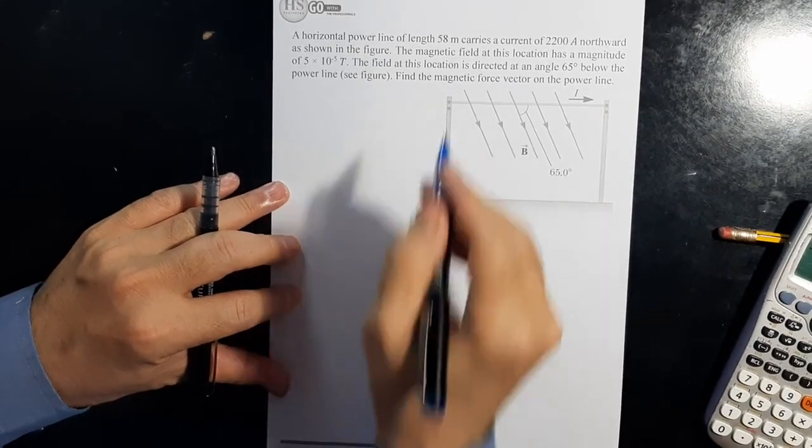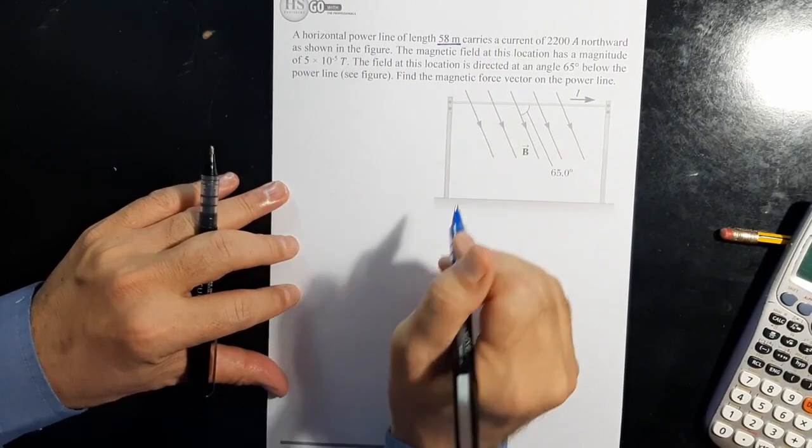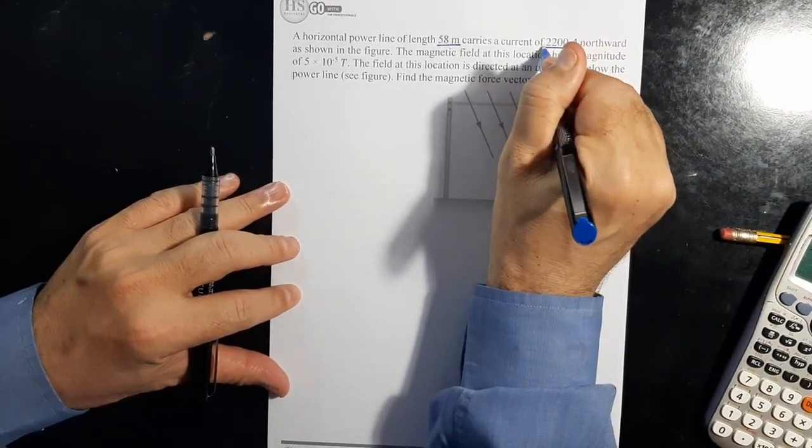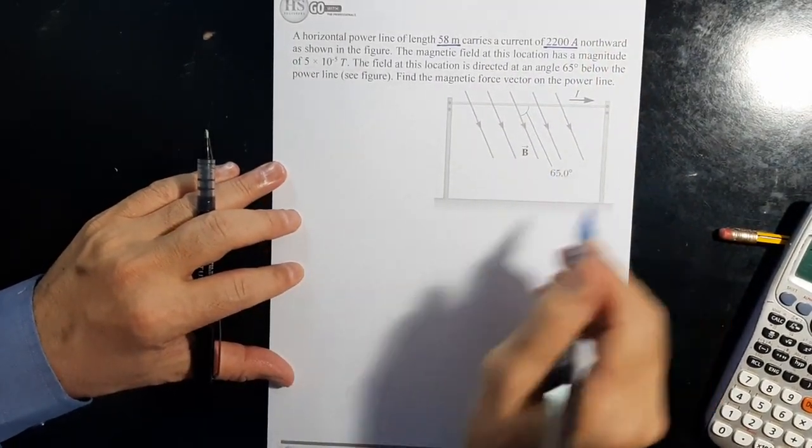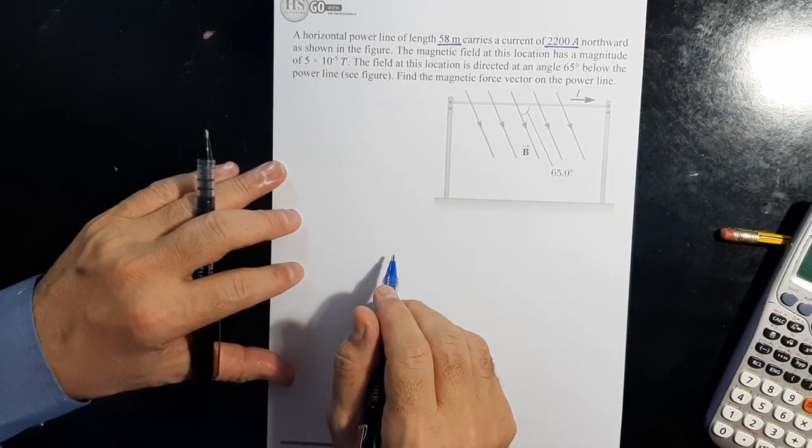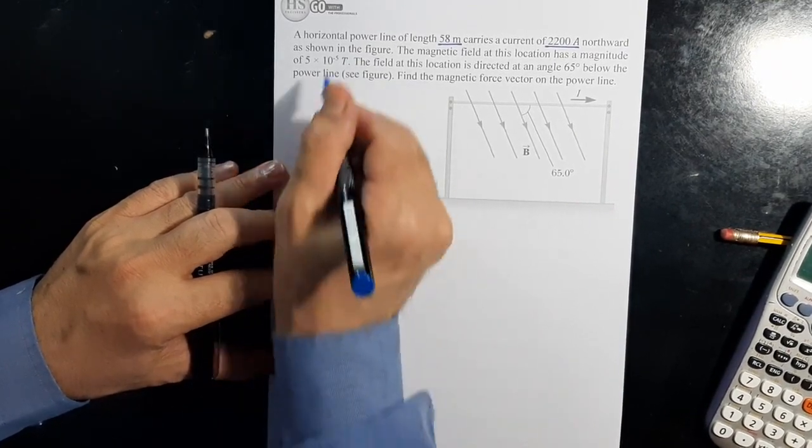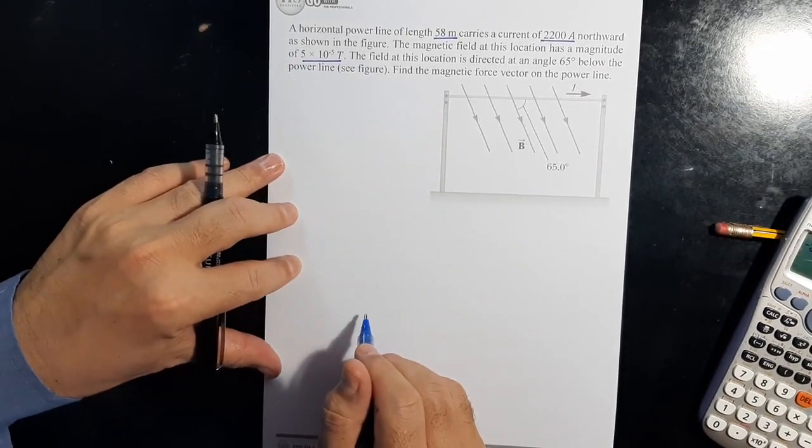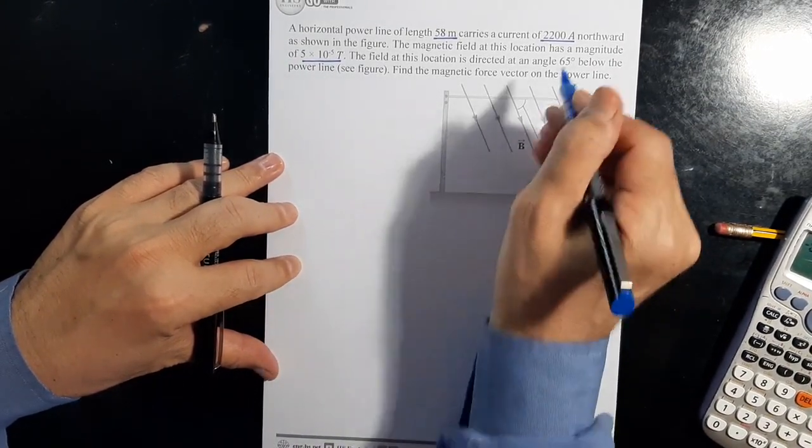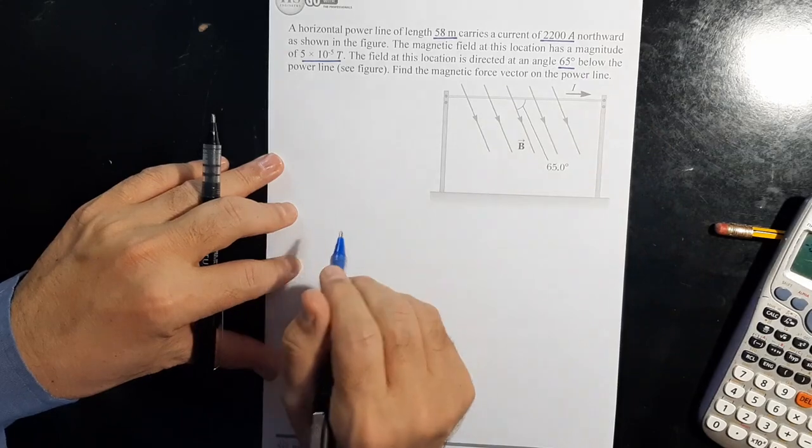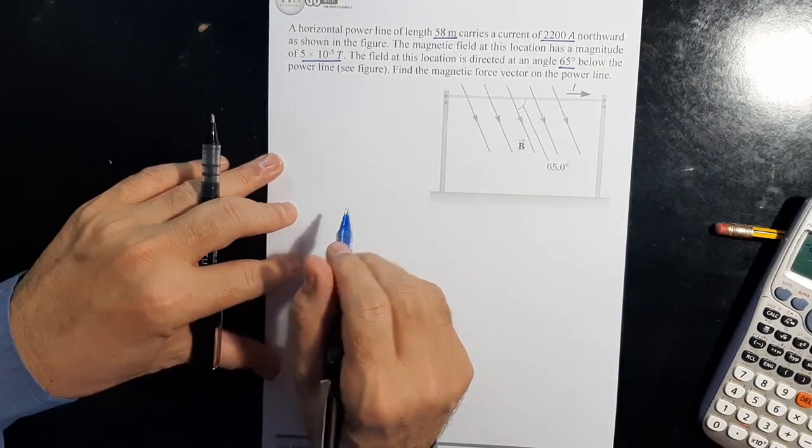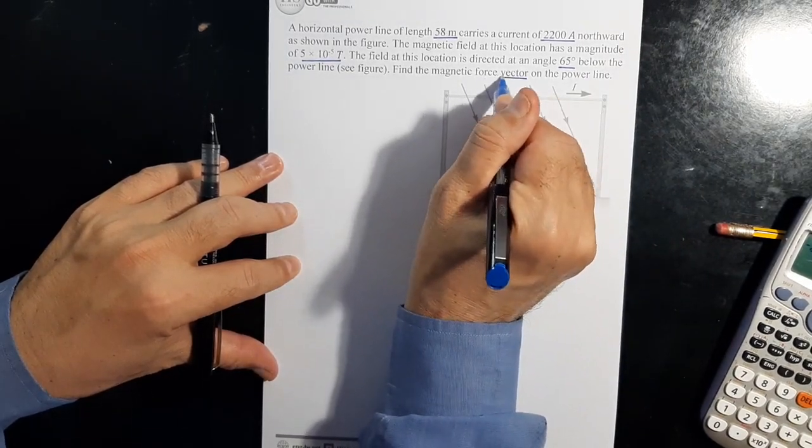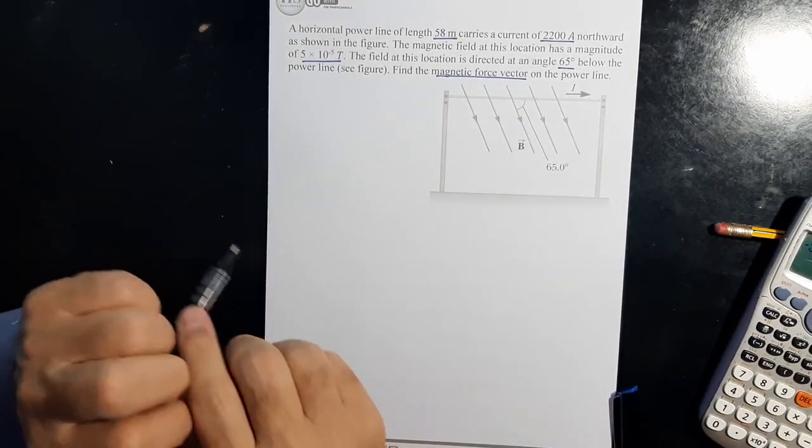A horizontal power line of length 58 meters carries a current of 2200 amperes northward as shown in the figure. The magnetic field at this location has a magnitude of 5 times 10 to the power minus 5 Tesla. The field at this location is directed at angle 65 degrees below the power line. Find the magnetic force vector on the power line.